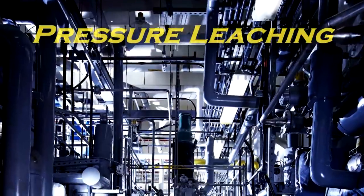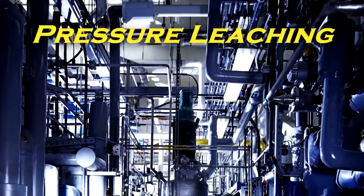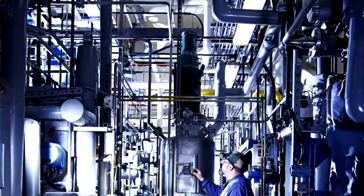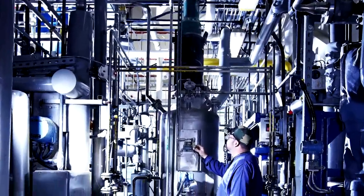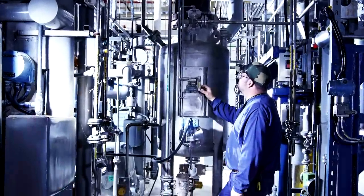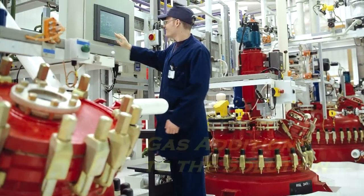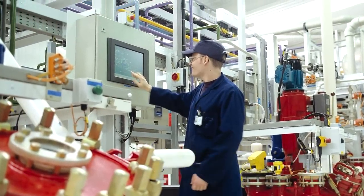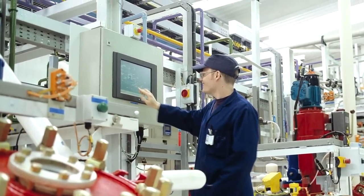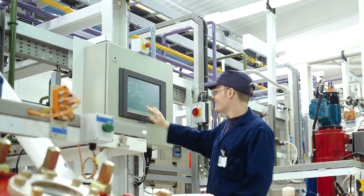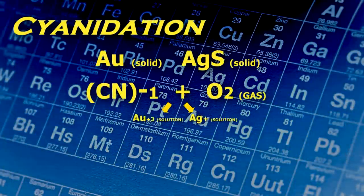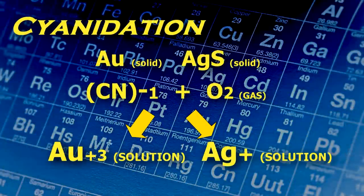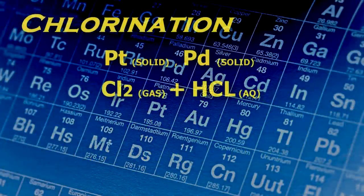Pressure leaching places the material in solvent and autoclaves to pressurize and heat. It is also used when gases need to be added for the leaching reaction. The pressure oxidation process to free gold is an example of this. Cyanidation and chlorination are other pressure leaching processes.